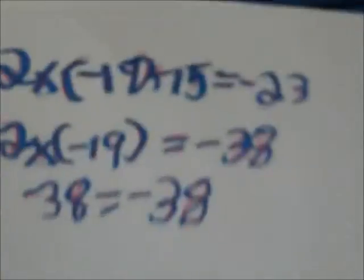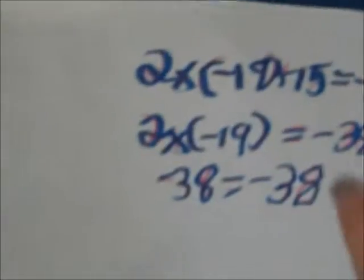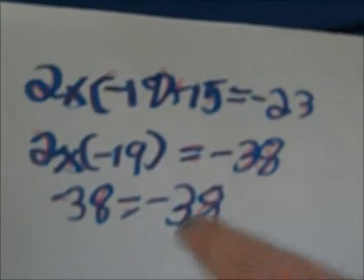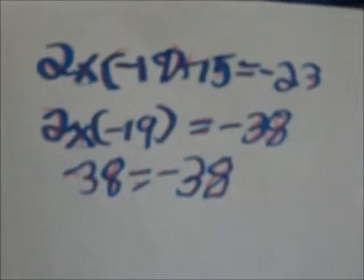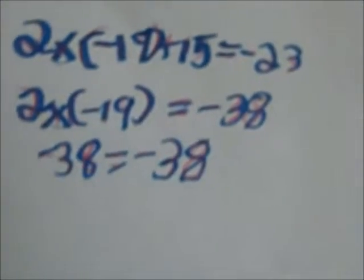And then the check: it would translate into 2 times negative 19 minus 15 equals negative 23. Then you would do minus 15 first, which equals negative 38. And then you would do 2 times negative 19, and negative 38 equals negative 38.